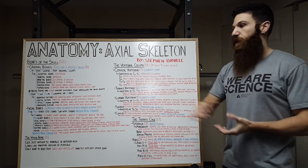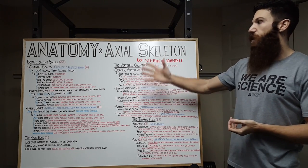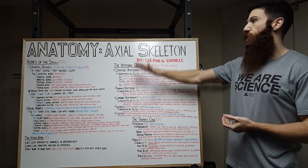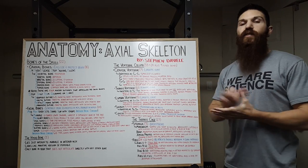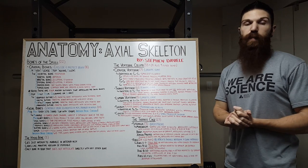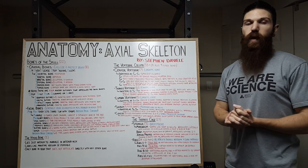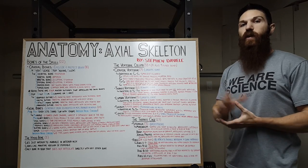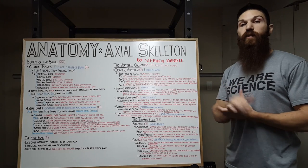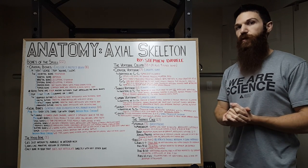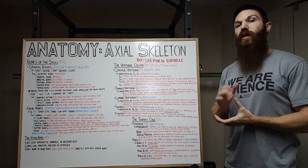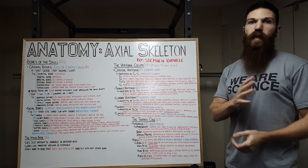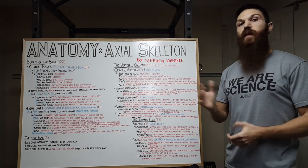Now that we've discussed the hyoid bone, we can move on to the next section of our axial skeleton, which is going to be our vertebral column. In total, we have 33 bones that make up our vertebral column. We have 24 vertebrae, and then we have our sacrum and coccyx. Our sacrum is made up of five fused bones, and our coccyx is comprised of four fused bones, although some people will have three and others will have five.